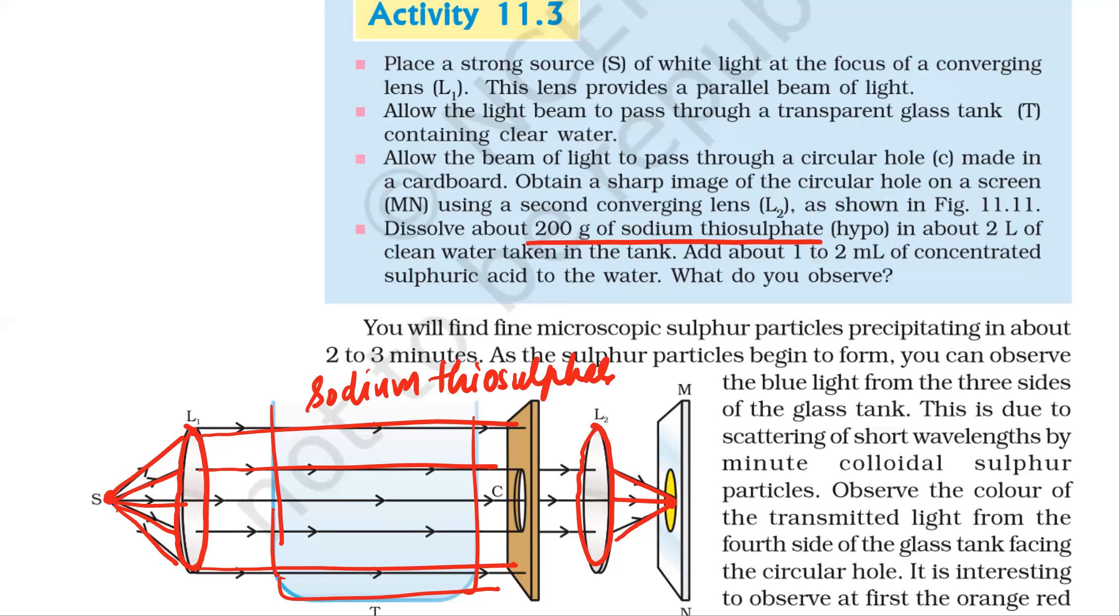Sodium thiosulphate is added because we want fine sulfur particles in this water. You will find fine microscopic sulfur particles precipitating in about 2 to 3 minutes.